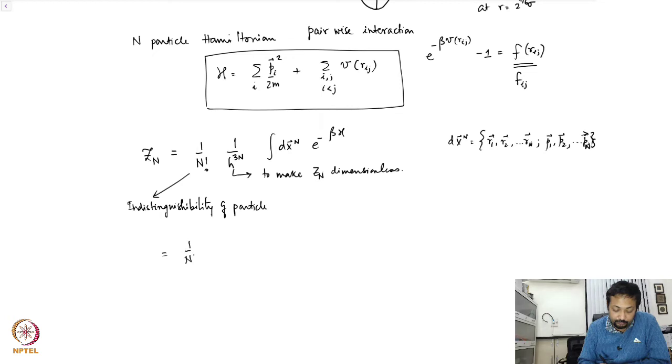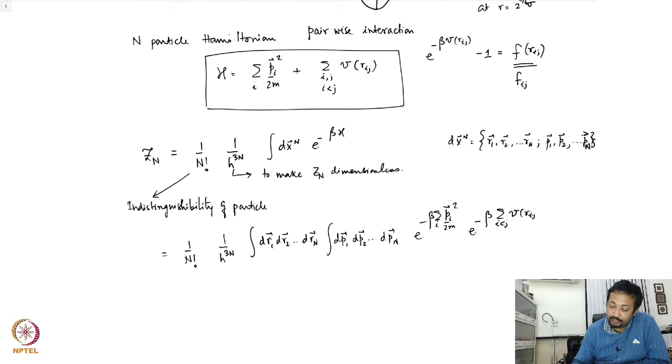If I work it out explicitly I have dr_1 dr_2 dr_n integral dp_1 dp_2 dp_n and then the Hamiltonian is sum over i p_i square over 2m minus beta, and then you have minus beta sum over i less than j V of r_ij.